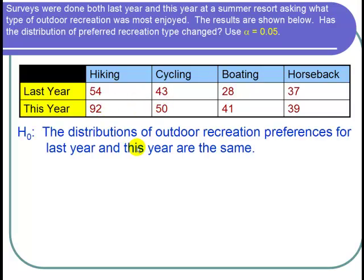So the null hypothesis is H0. The distributions of outdoor recreation preferences for last year and this year are the same.